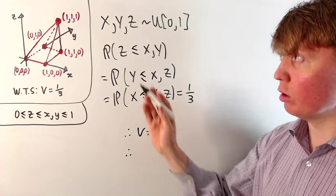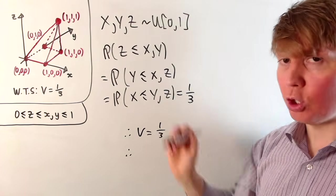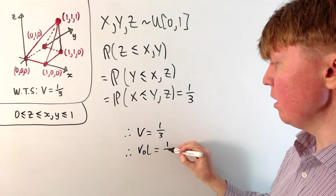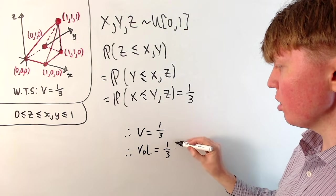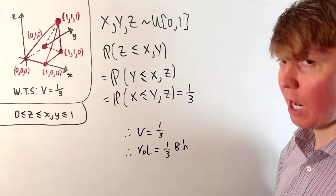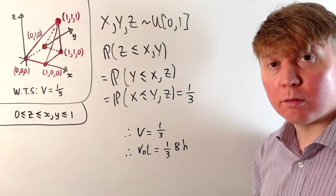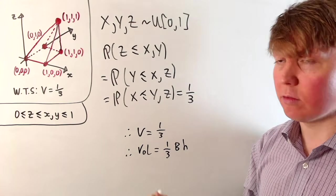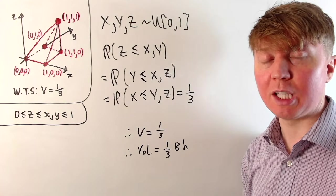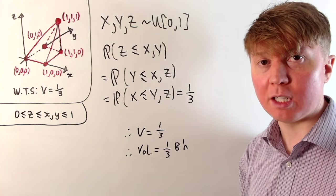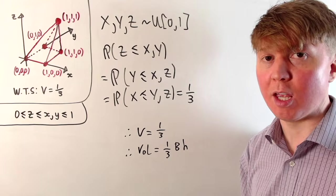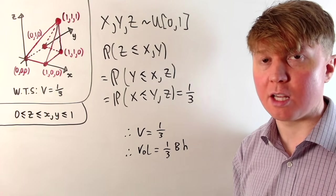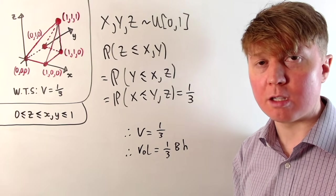So the probability of landing in the region where z is less than or equal to x and y is a third — meaning this is a third of the volume of the cube, so this volume is indeed a third. Going back to our original pyramid, which was four copies of this quarter pyramid, the total volume is indeed a third times the base area times the height. You could also extend this argument, by choosing different coordinates, to find the volume of any square-based or rectangular-based pyramid using the exact same approach.